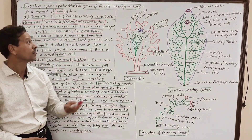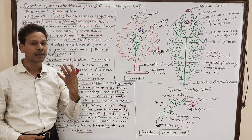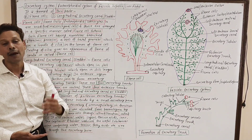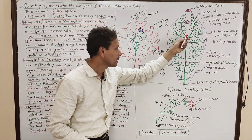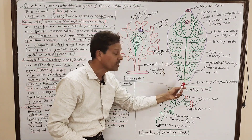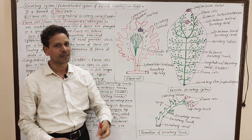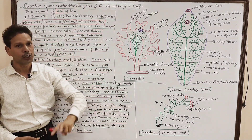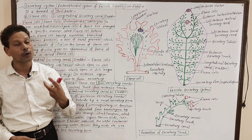Dear students, the excretory system, or protonephridial system, of Fascia hepatica — the liver fluke — has two parts: the flame cells, and the second component, the longitudinal excretory canal, also named the bladder.